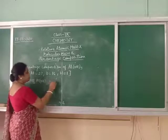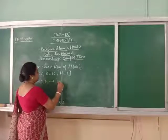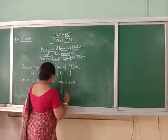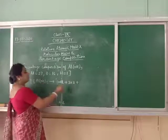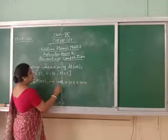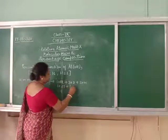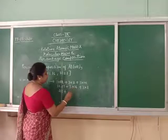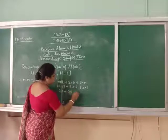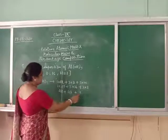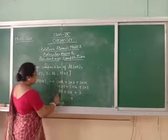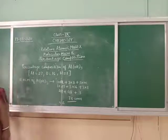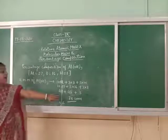Aluminium hydroxide is Al(OH)3. There is 1 atom of aluminium, and the subscript 3 gives 3 atoms of oxygen and 3 atoms of hydrogen. So: 1×27 + 3×16 + 3×1 = 27 + 48 + 3 = 78 AMU. So the relative molecular mass of aluminium hydroxide is 78.